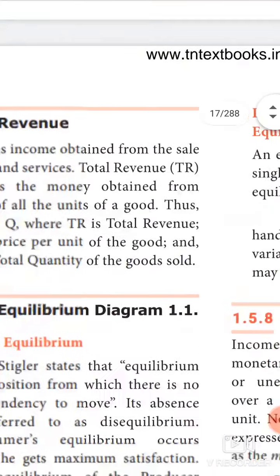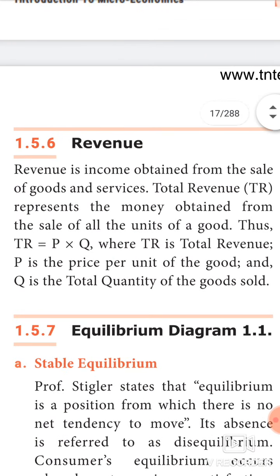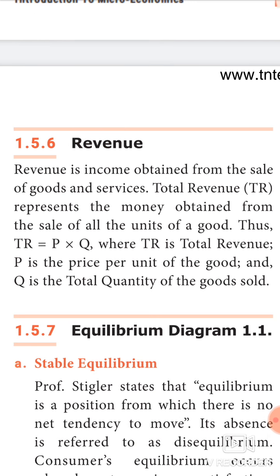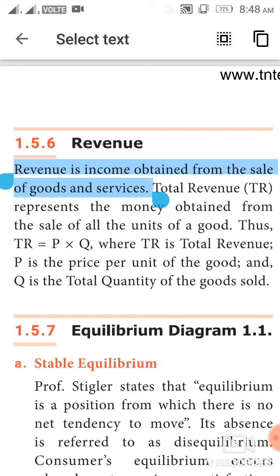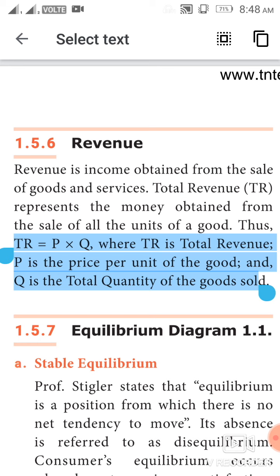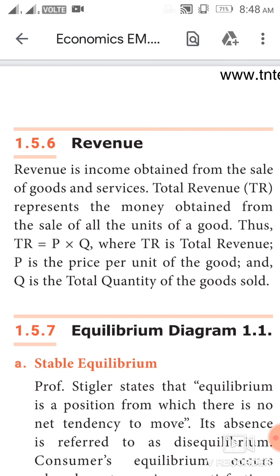Next concept is revenue. Revenue is income obtained from the sale of goods and services. Total revenue, TR, represents the money obtained from the sale of all the units of a good. Thus, TR is equal to P multiplied by Q, where TR is total revenue, P is the price per unit of the good, and Q is the total quantity of goods sold.